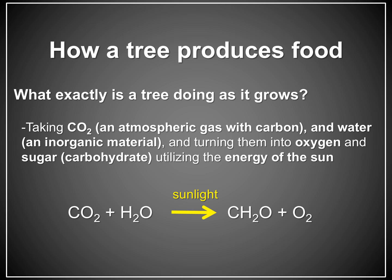CO2 is also released through the burning of organic materials and fossil fuels. Trees absorb CO2 and, utilizing the light energy of the sun, strip an electron from a water molecule. Trees convert the sun's light energy to chemical energy, and a reaction occurs that converts carbon dioxide to an organic compound or sugar. Oxygen is a byproduct of this process. The organic compound produced is essentially the food source for the tree.